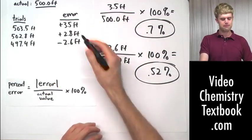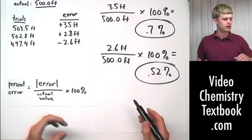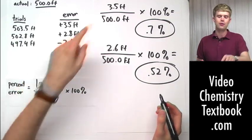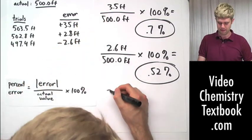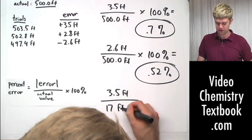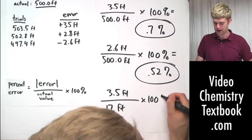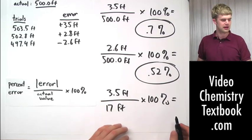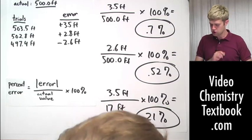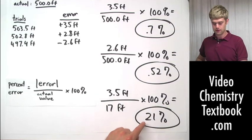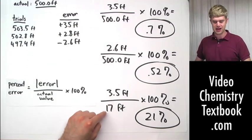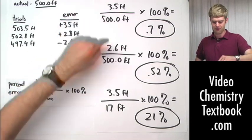Let's take the same error, 3.5 feet, and imagine that we were trying to measure something that was only 17 feet and we ended up with an error of 3.5. In that case, we do 3.5 feet divided by 17 feet and multiply that by 100%. In that case, our error is much bigger. It's going to be 21%. That's huge.